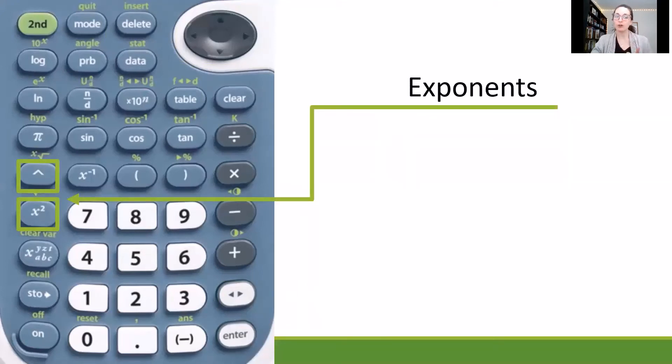If you have a different exponent, like three or ten or a thousand, whatever it might be, you can type the number that you're using, the base. So for example, use seven again, then click the caret that's right above where you see the x squared, and then you can click the power. So for example, seven to the eighth power, I would do seven carat eight.